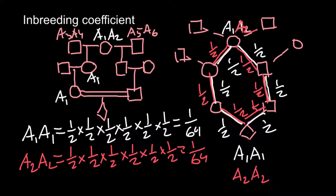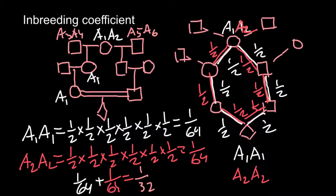Now we have to add these two probabilities: 1/64 plus 1/64. The answer is 1 out of 32. So this individual has a probability of 1 out of 32 of being homozygous for an allele inherited from the common ancestor.